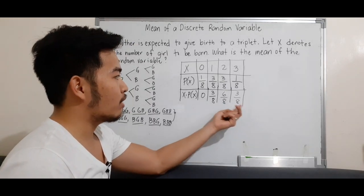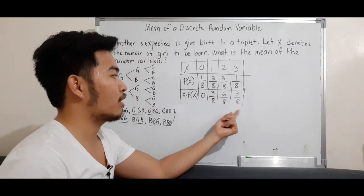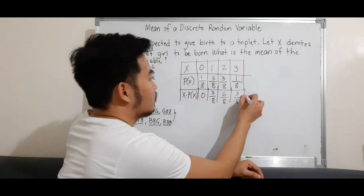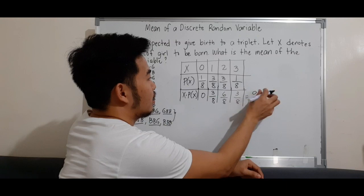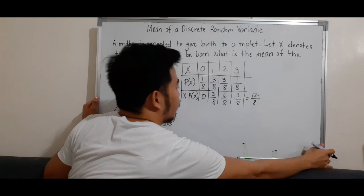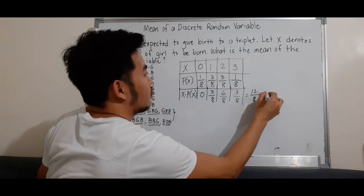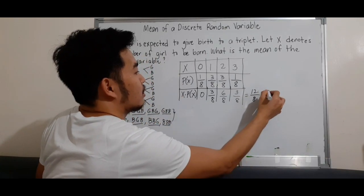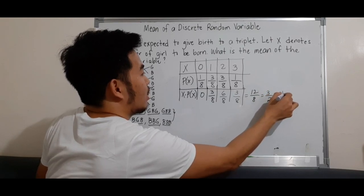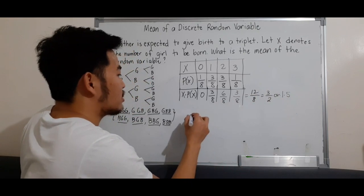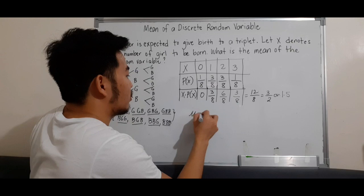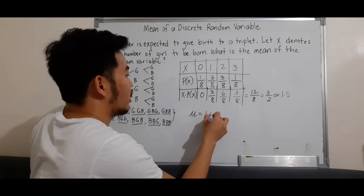After that, we'll add all of these. We'll just add the numerators since they have the same denominator. So 3 plus 6 plus 3 equals 12. So 12/8, or divided by 4 to lowest terms, we get 3/2 or 1.5. So we have the mean of the random variable x equal to 1.5.